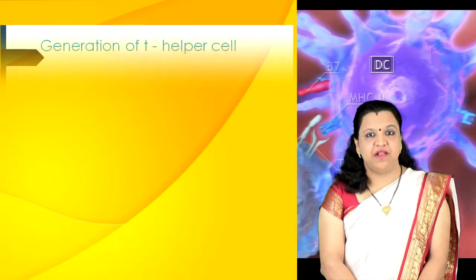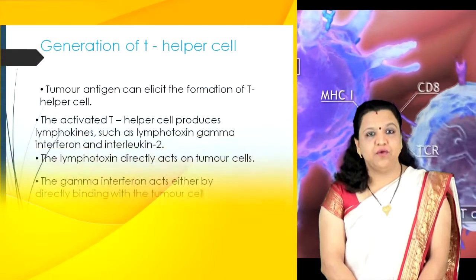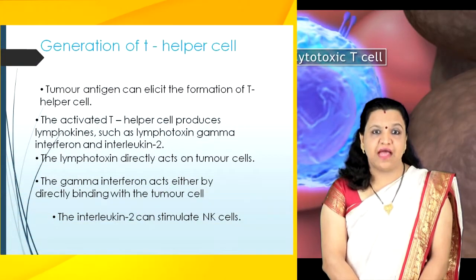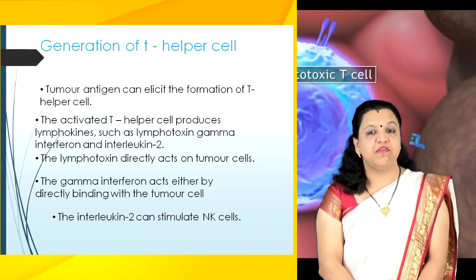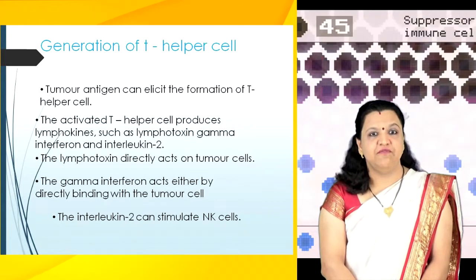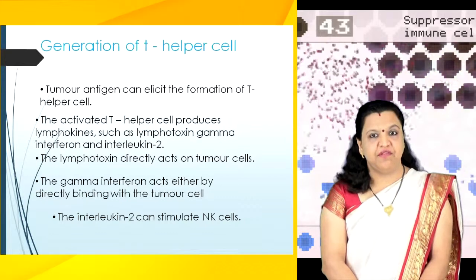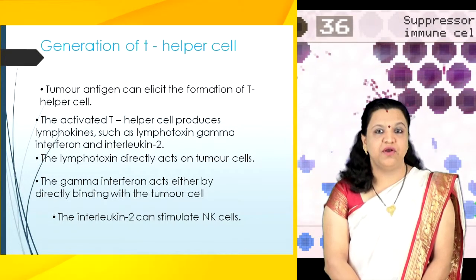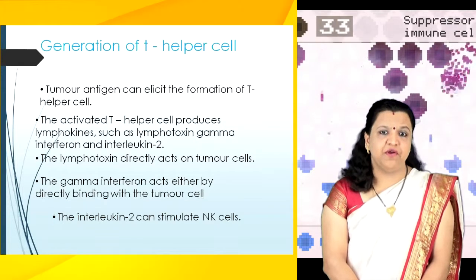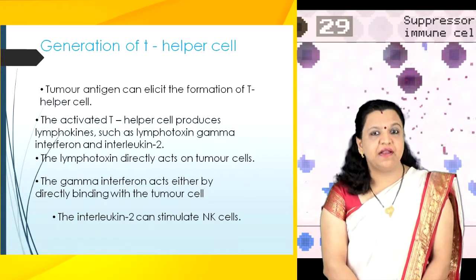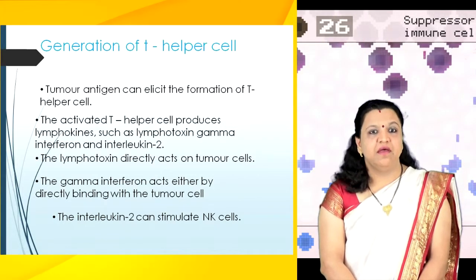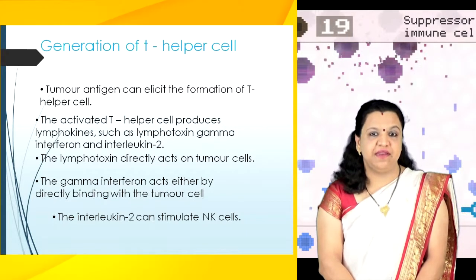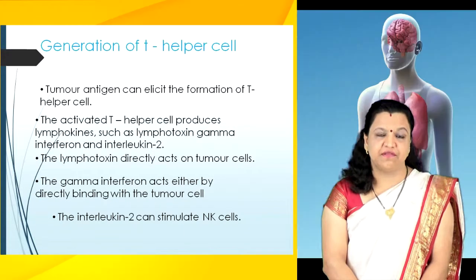Generation of T helper cells is also associated with tumor immunity. Tumor antigens can elicit the formation of T helper cells. The activated T helper cells produce lymphokines such as lymphotoxin, gamma interferons, and interleukin-2. Lymphotoxin directly acts on tumor cells, gamma interferons act either by directly binding with the tumor cells, and interleukin-2 can stimulate natural killer cells.